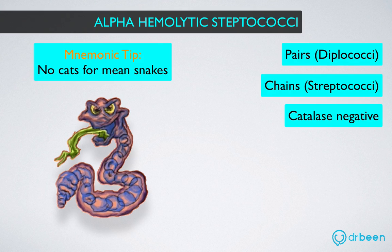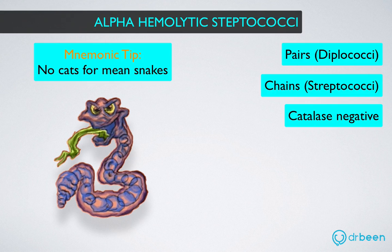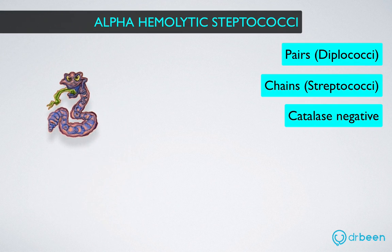Streptococcus viridans — S. viridans makes long chains of spheres, which resemble mean adult snakes in our picture. Of course, the gram positive stain gives the snake a purple color. We will talk more about this pathogen in a little bit.